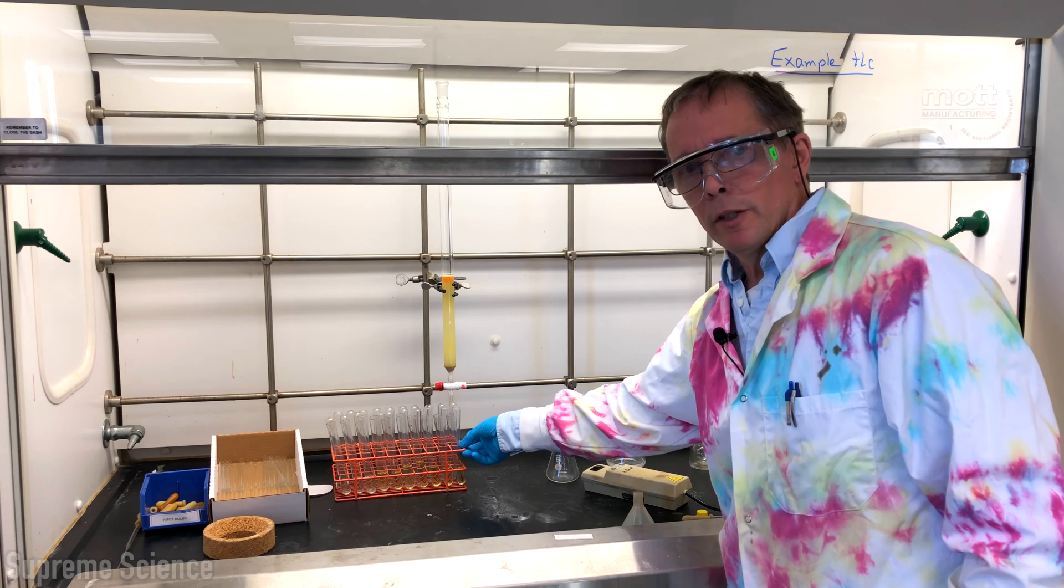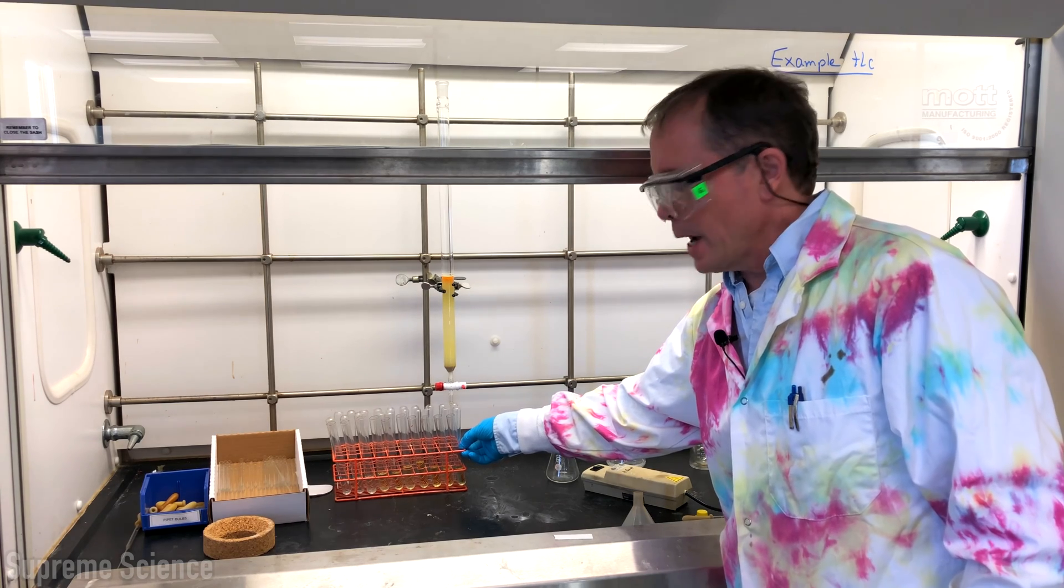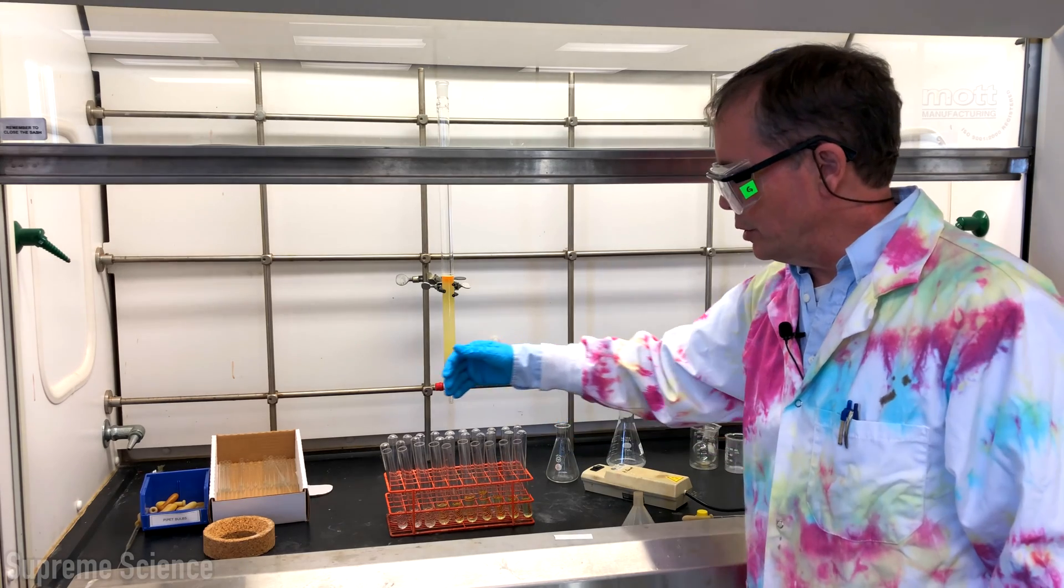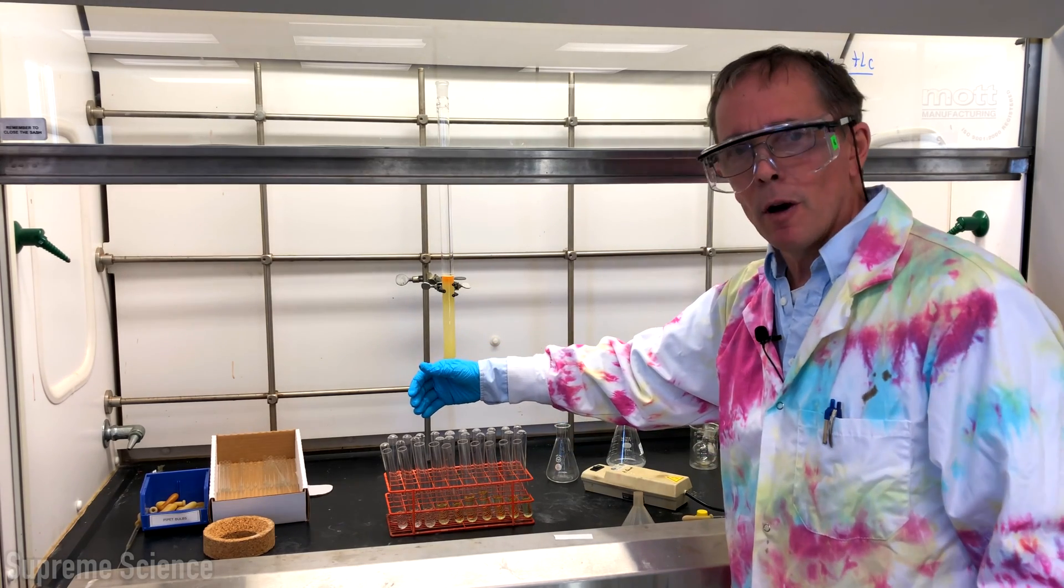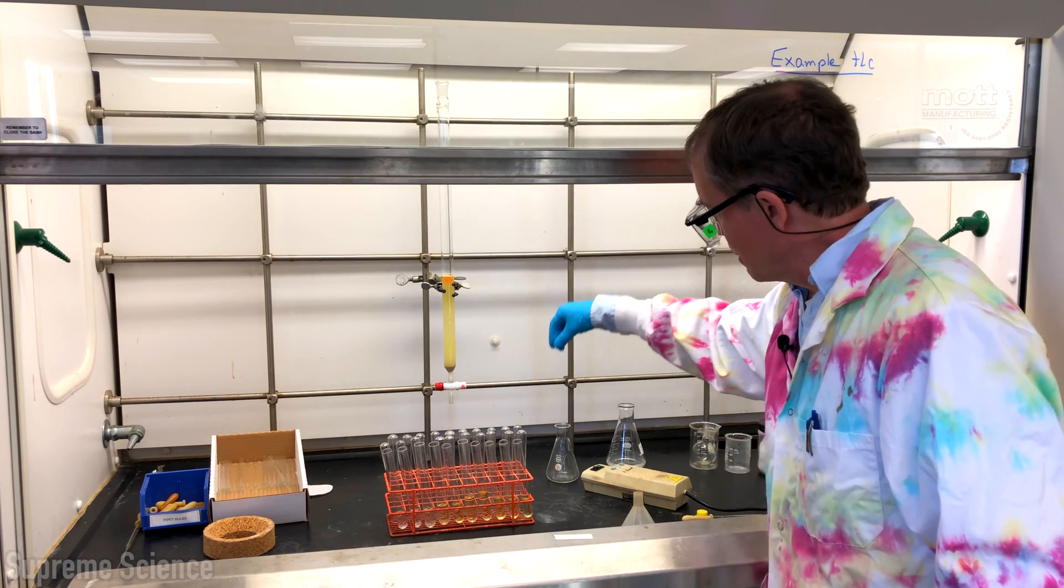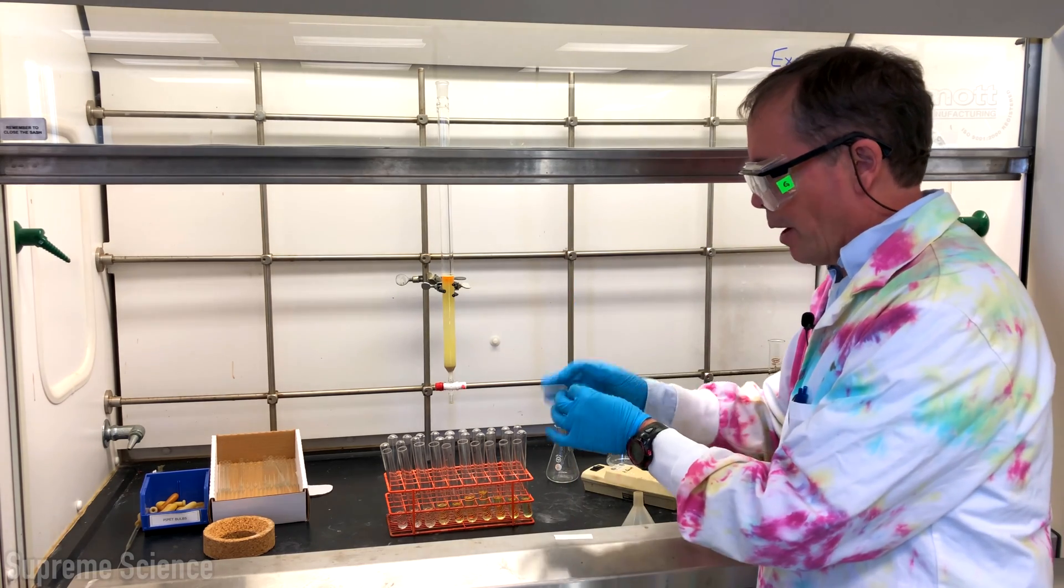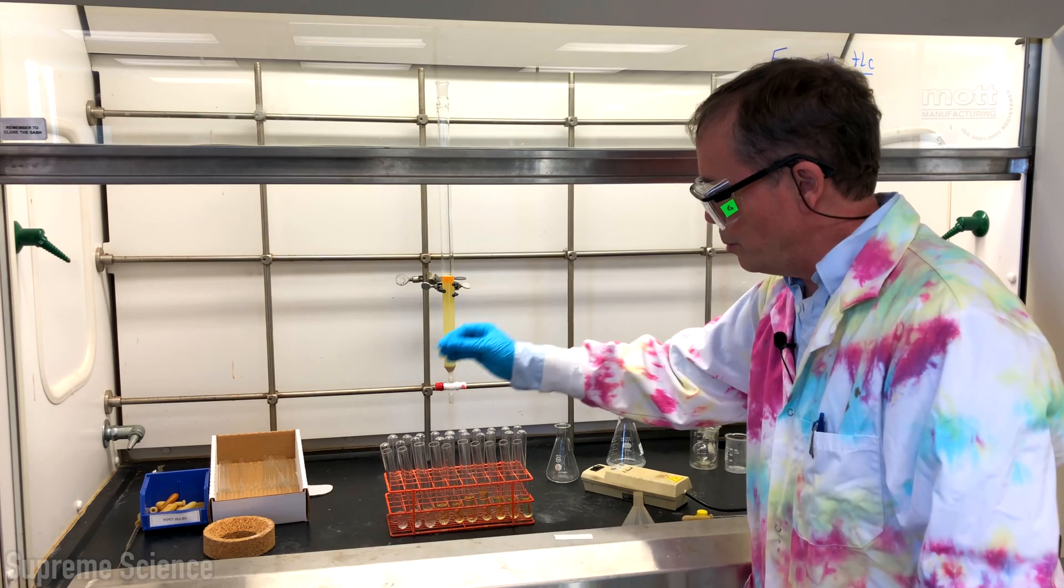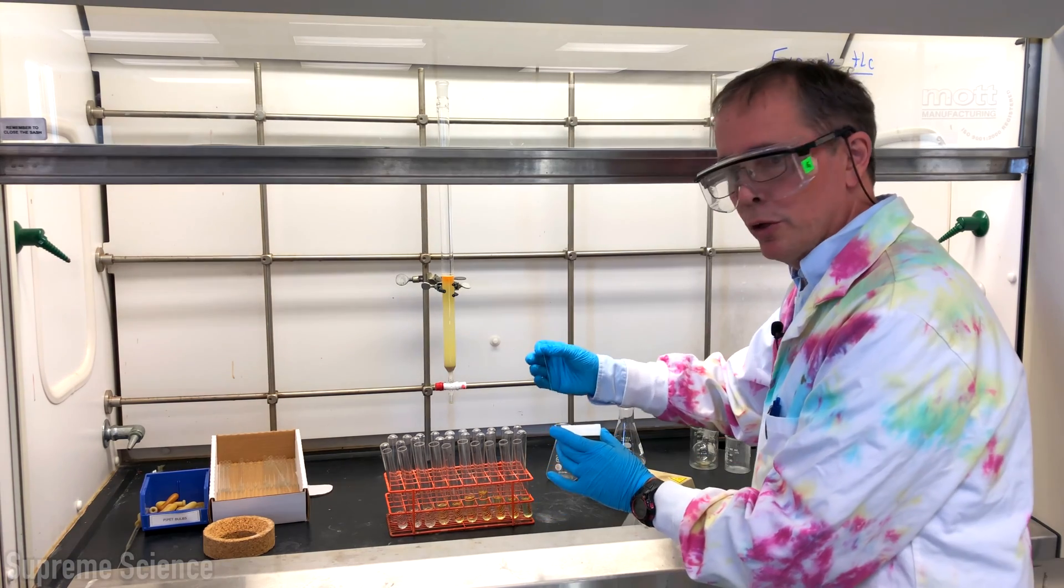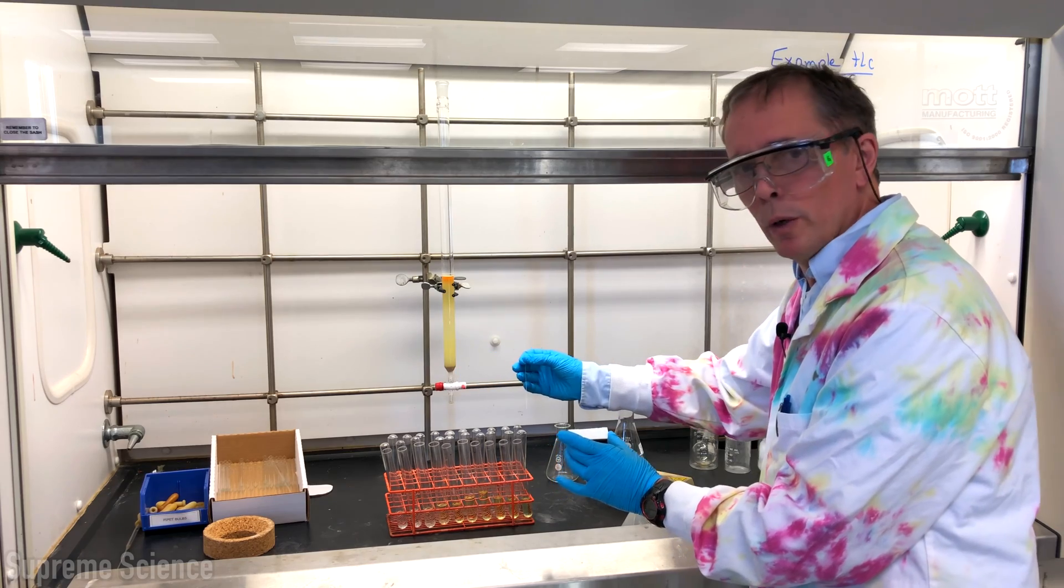Our column has run as expected. We've collected 10 fractions. And now we're going to quickly survey these fractions to see if we can find the compounds of interest in them. We'll take a spotter and spot every second tube onto a TLC plate like this. Look at it under UV in order to determine in which fraction we'll see our compound.